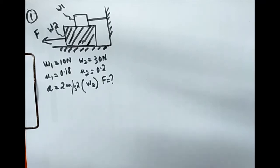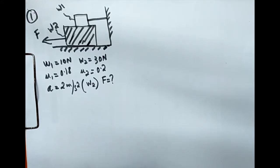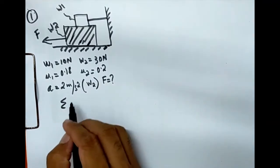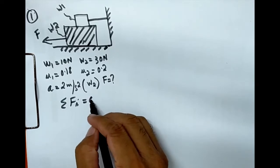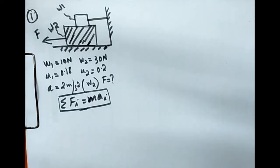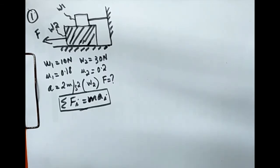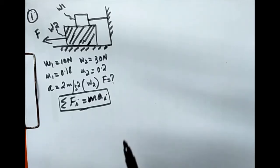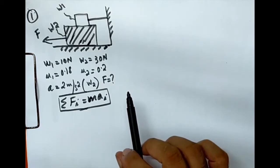This is a problem where we need to use the dynamic equilibrium condition because object w2 is in motion with an acceleration. We are going to use D'Alembert's principle: sigma Fi equals m times ai. The best tool for such problems is the free body diagram, a graphical tool used to solve complex problems like this.